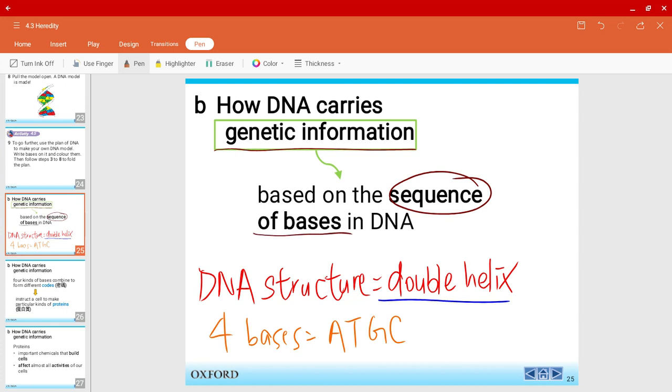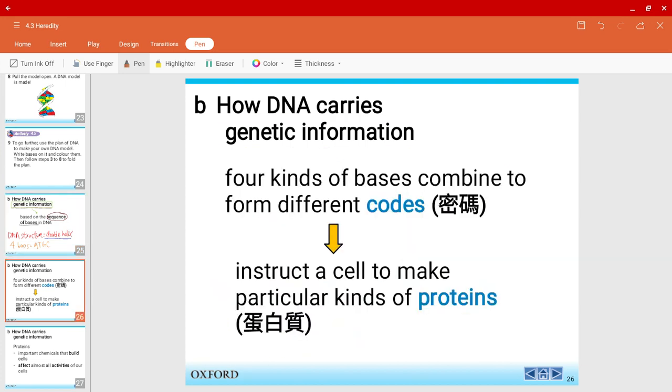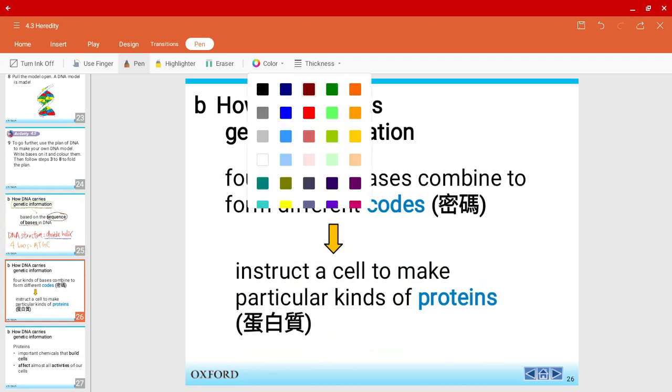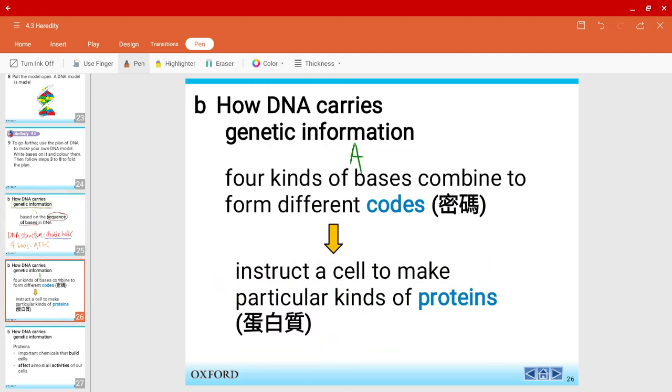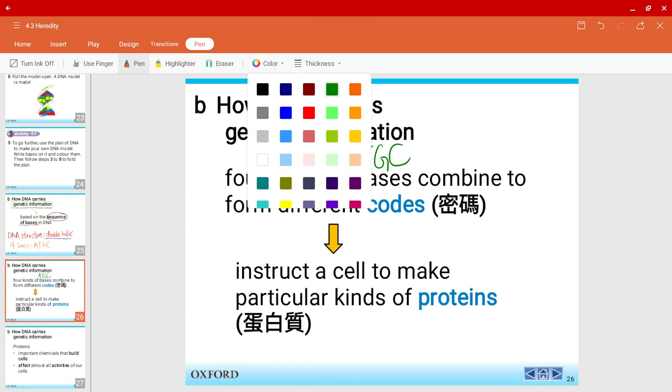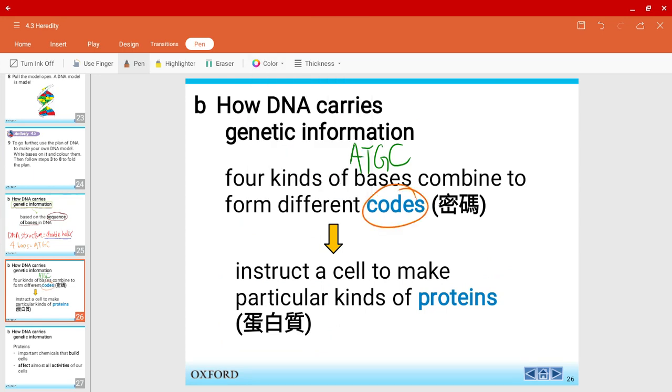So what exactly do I mean by this? As we know, there are four kinds of bases. Let me write it down again. A-T-G-C at Gold Coast. They can combine to form different codes. What do I mean by codes? Later on, we'll be trying to solve some codes, some mystery. I love those questions. Hopefully, you'll enjoy them too. But these codes that we get, they can instruct a cell to make particular kinds of proteins.